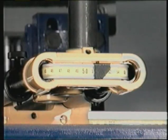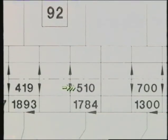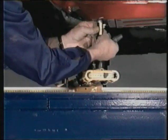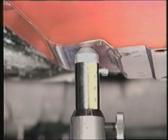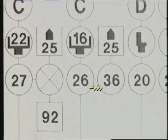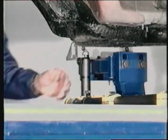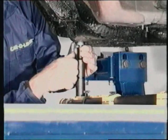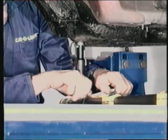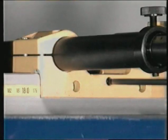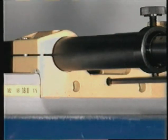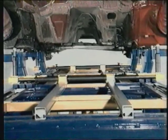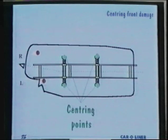Set the given width dimension on one side of the measuring slide and lock with the knob. Raise the measuring scale with the adapter against the measuring point and lock with the knob. Repeat the procedure on the opposite side of the measuring slide and adjust, if necessary, the width dimension to obtain the same measurements on both sides. Lock the measuring slide from one side only. The measuring system is now centered, which indicates that the measuring bridge is lined up with the undamaged part of the vehicle's center line.